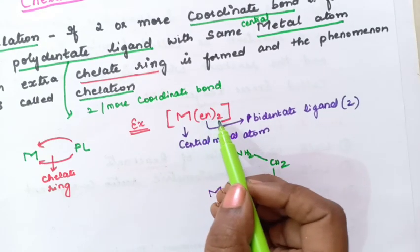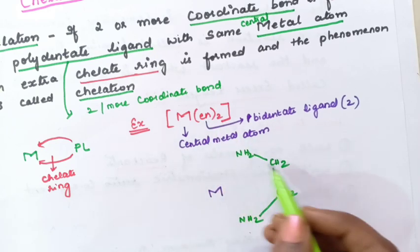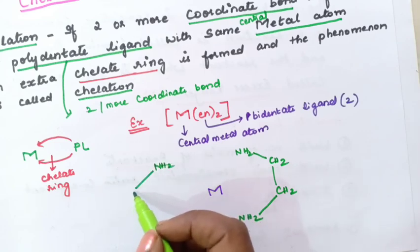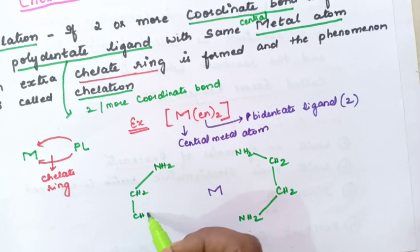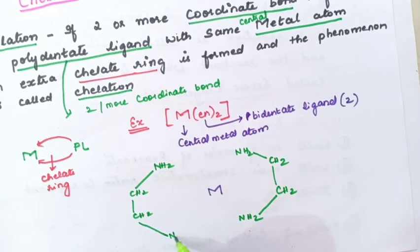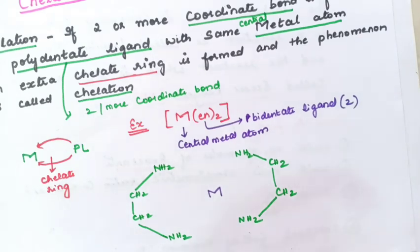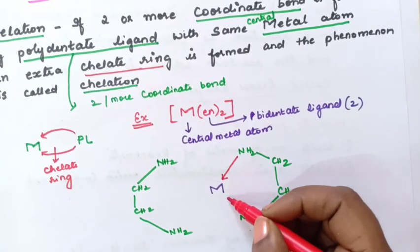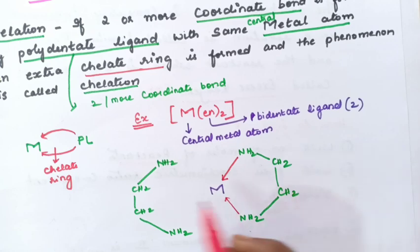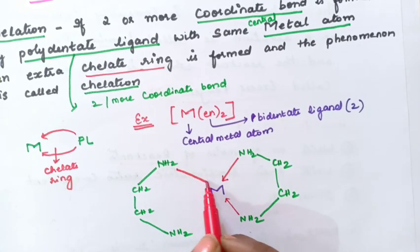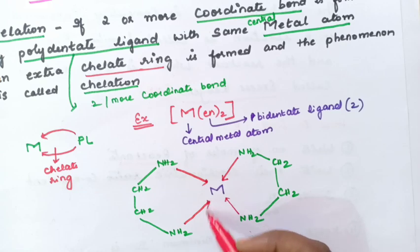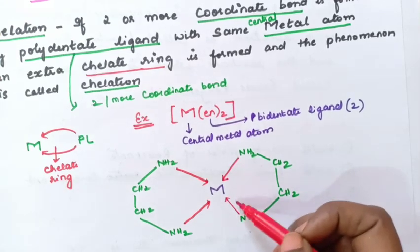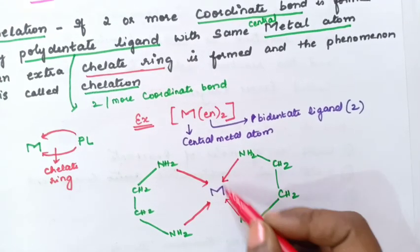How many ethylene diamine are present? Two ethylene diamine are present. One on this side and another on this side: NH2-CH2-CH2-NH2. Now, this nitrogen will form one coordinate bond with the central metal atom, and this nitrogen will form one coordinate bond with the central metal atom. Similarly on the other side, each nitrogen forms one coordinate bond. As a result of the formation of these coordinate bonds, a ring is formed.